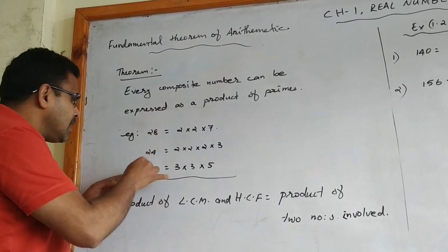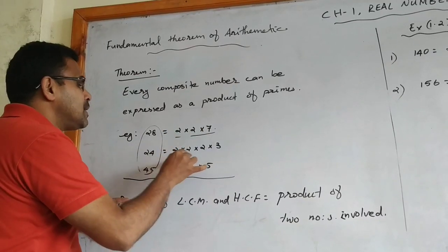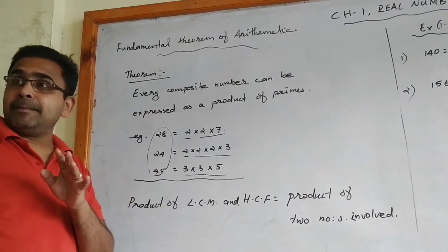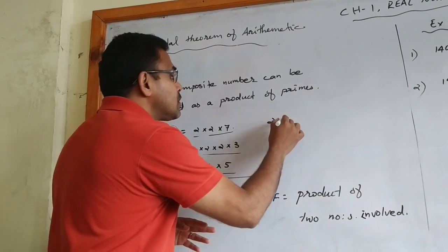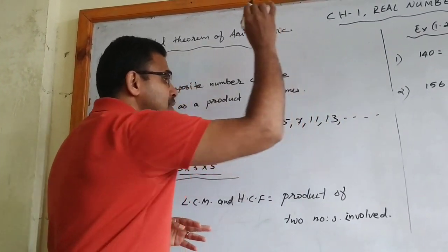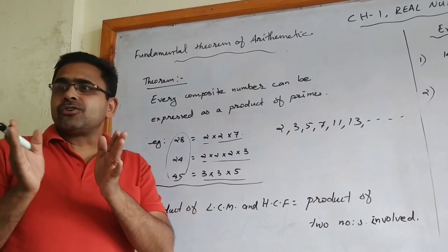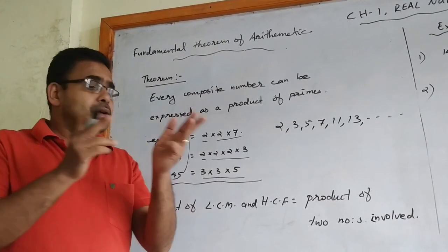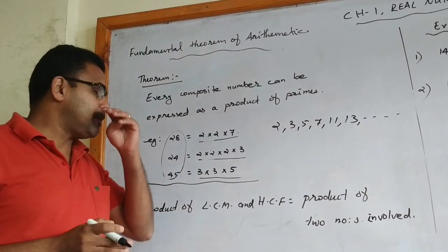These three — 28, 24, and 45 — are composite numbers. Each composite number we are factorizing as the product of prime numbers. We know which are the prime numbers: 2, 3, 5, 7, 11, 13, etc. Prime numbers means the number should not have more than 2 factors — either the same number or 1. Such numbers we are calling prime numbers.